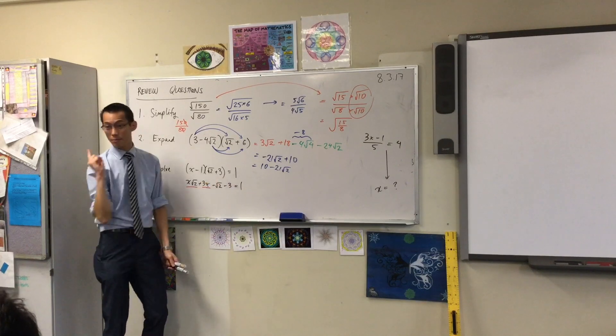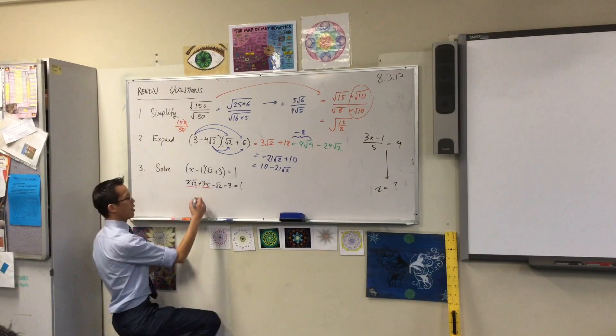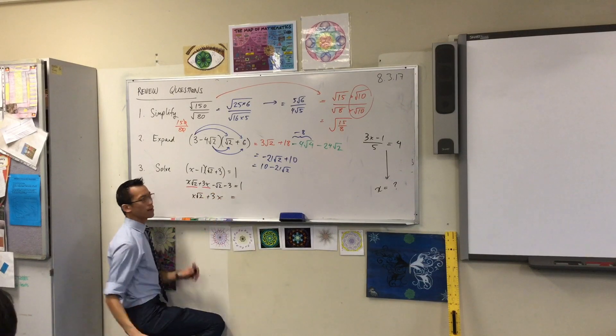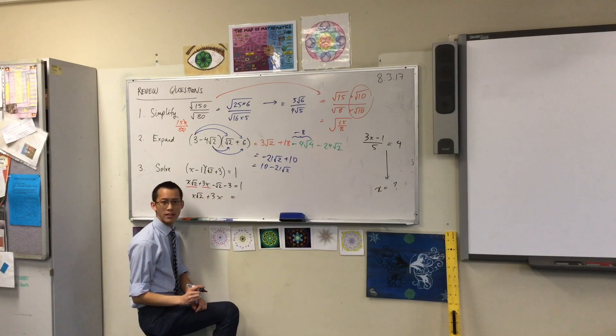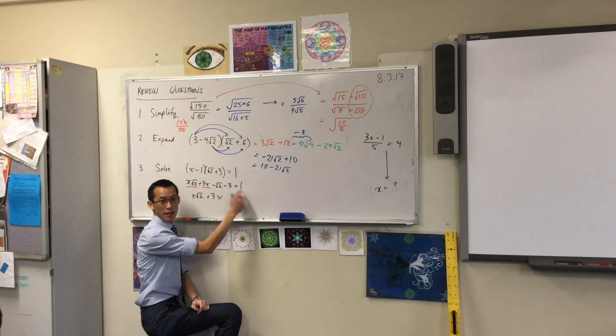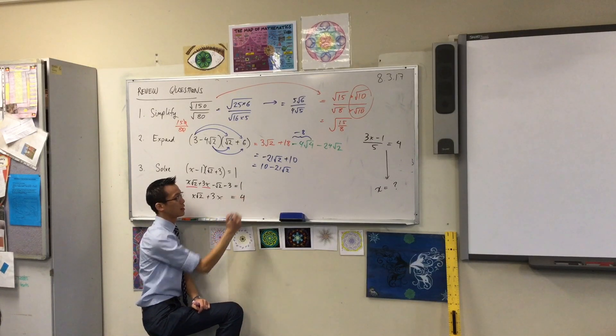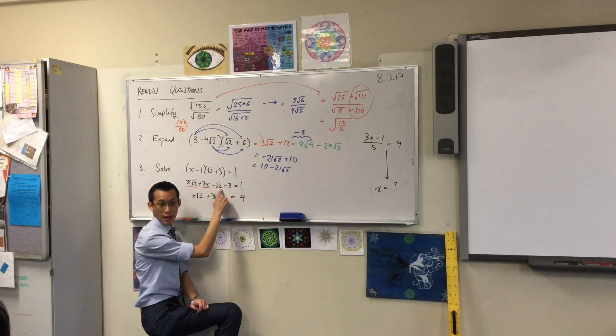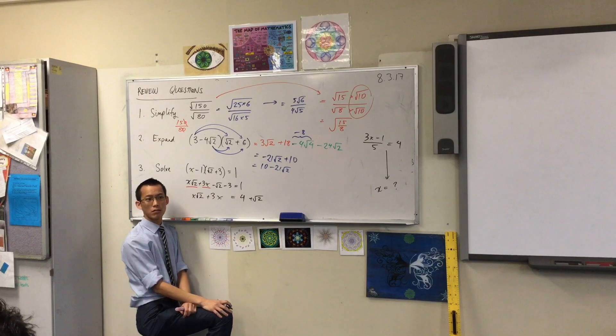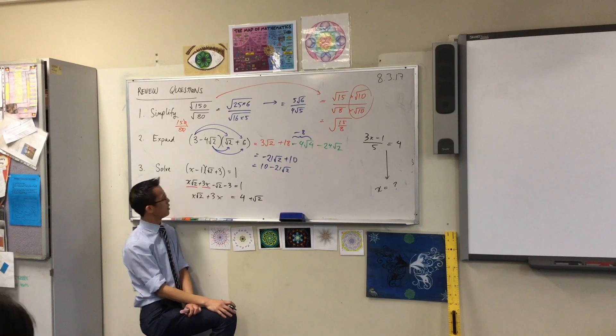So, I'm going to get these guys and I'm going to put them on the other side. I'm going to go x root 2 plus 3x equals. What ends up on the right hand side? When you add 3 to both sides, this becomes 4, then you add root 2 to both sides, which gives you plus root 2. How do you feel? Is that looking okay so far?